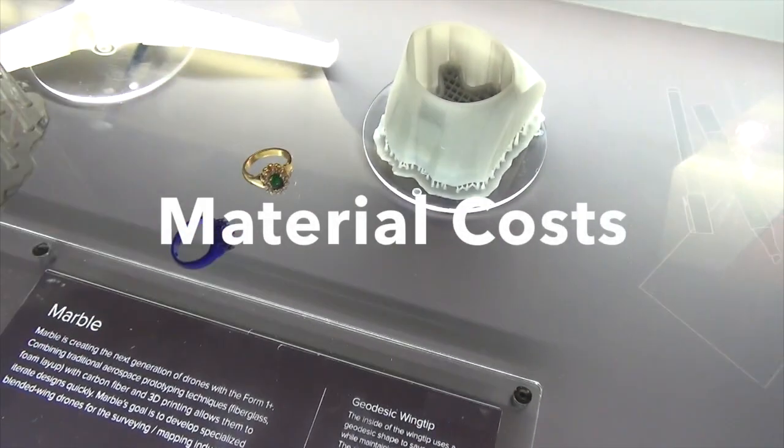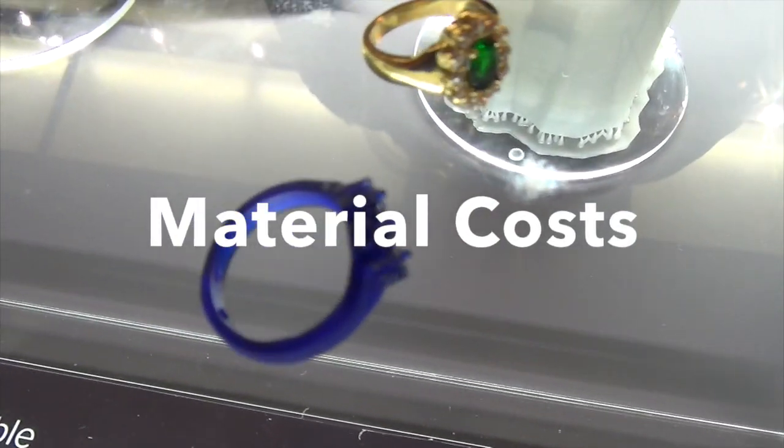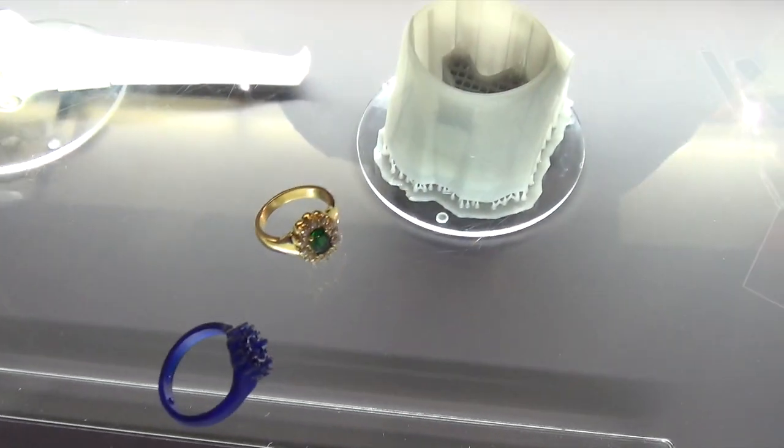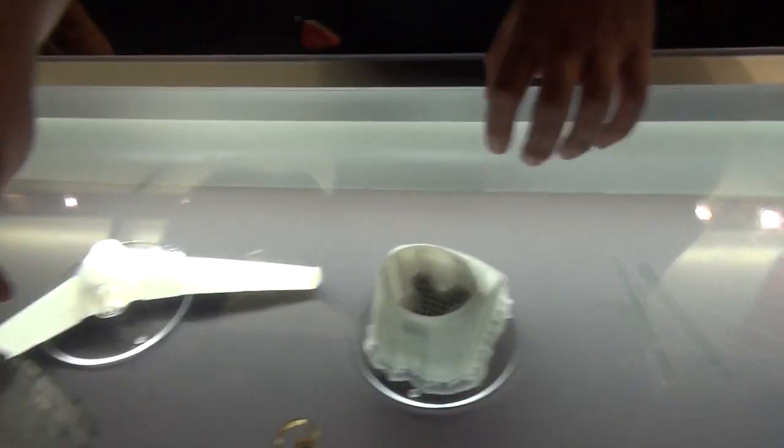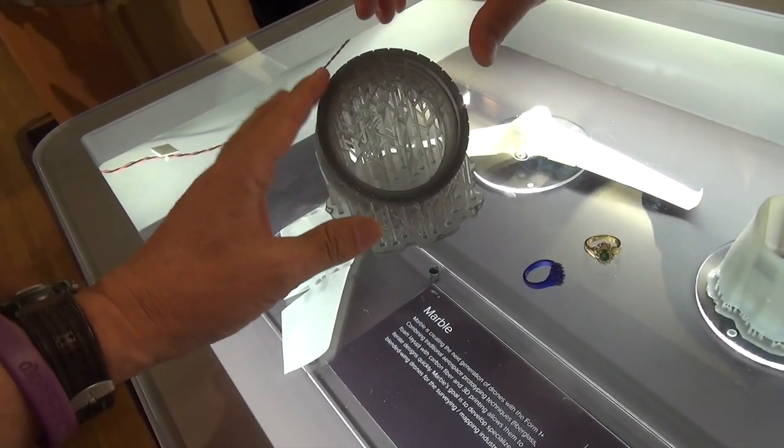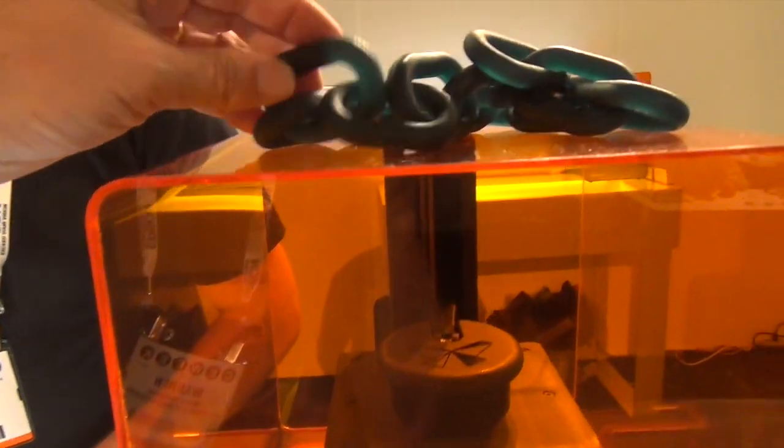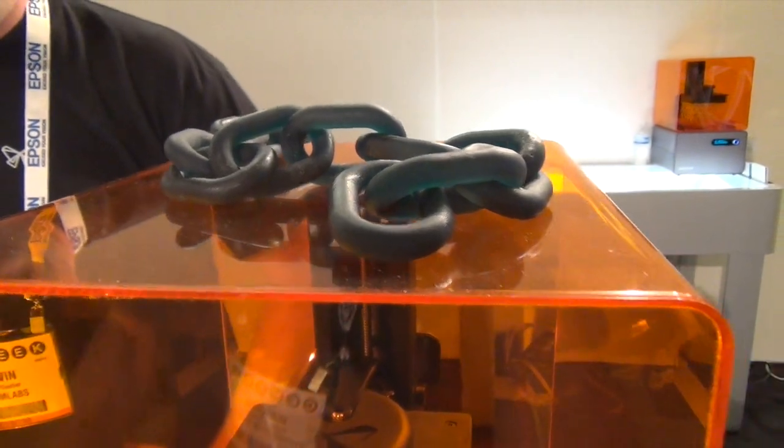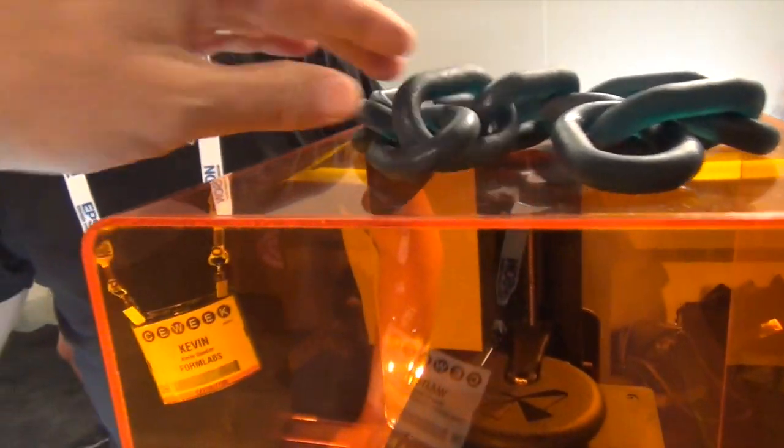So the standard hard plastic prototyping resins are $150 per liter, or $0.15 per cubic centimeter. The flexible resin is $100 for 500 milliliters. How much would this cost, this part? Or maybe, how much would this chain cost? About $20 to print. It all works out by volume.